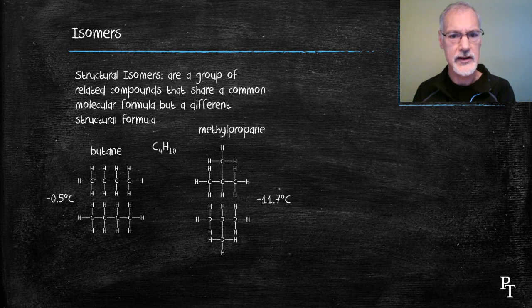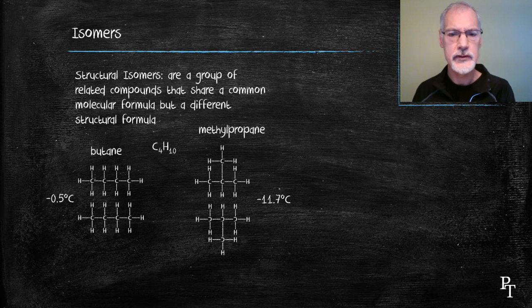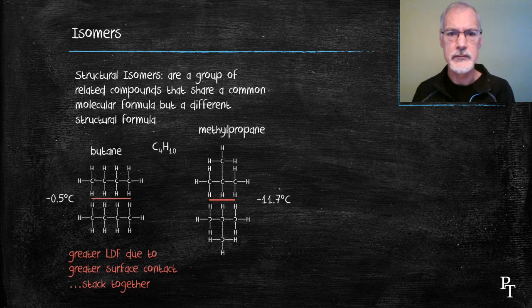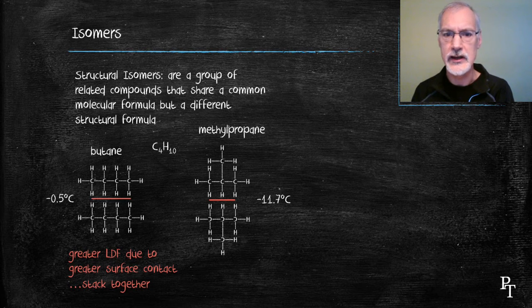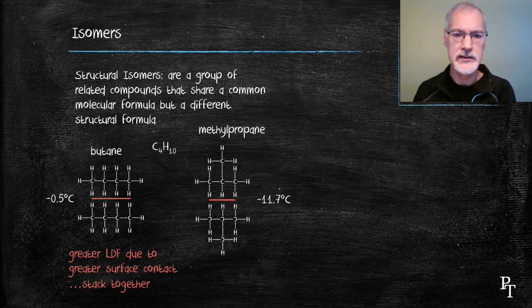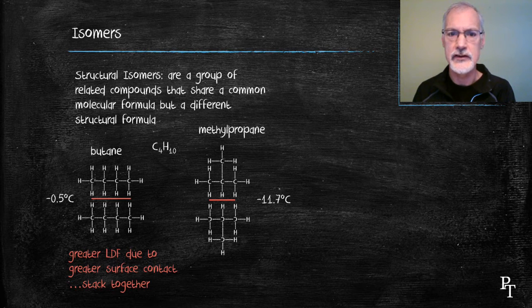Why is that? They're both the same size. It has to do with the surface area that can contact between the two of them. Butane, being more linear, can stack closer together, which enhances my London dispersion force compared to the methyl propane.